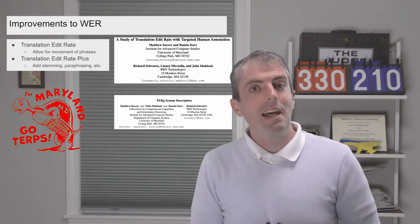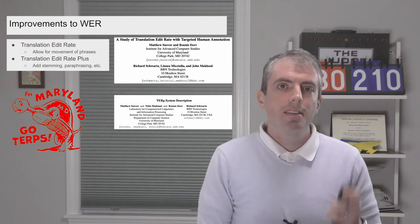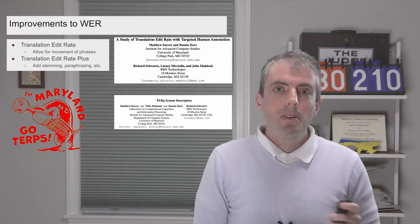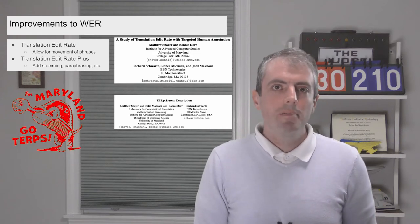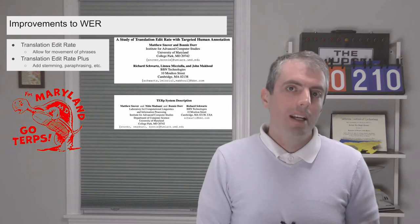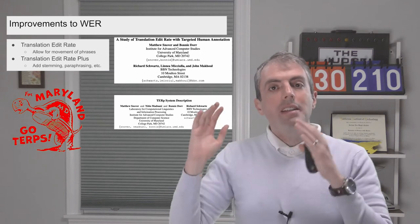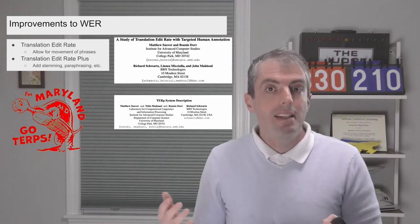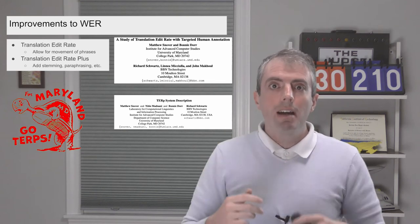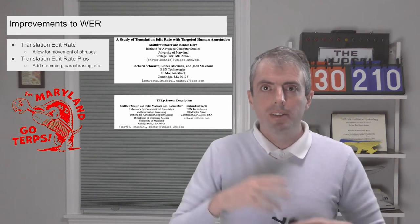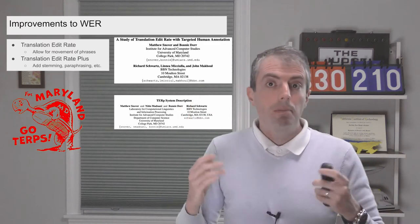And because we're at Maryland, I'm contractually obligated to mention some of Maryland's early contributions to this metric, called Translation Edit Rate and Translation Edit Rate Plus. This took the basic error rate and gave it a copy-paste key. So you can do things like move a prepositional phrase around without paying a huge price. And it also accounts for different word forms, for example, giving credit to a reference that says purplish and a translation that says purple.